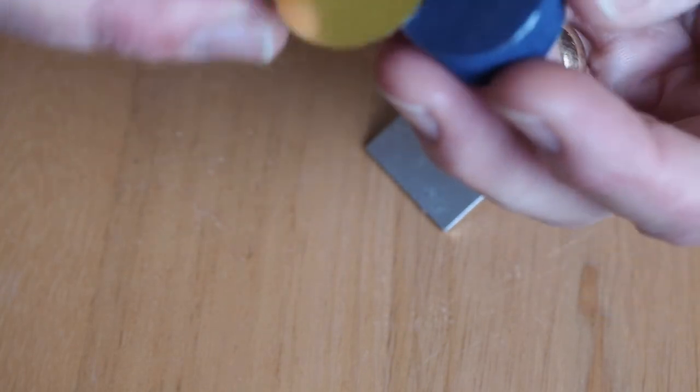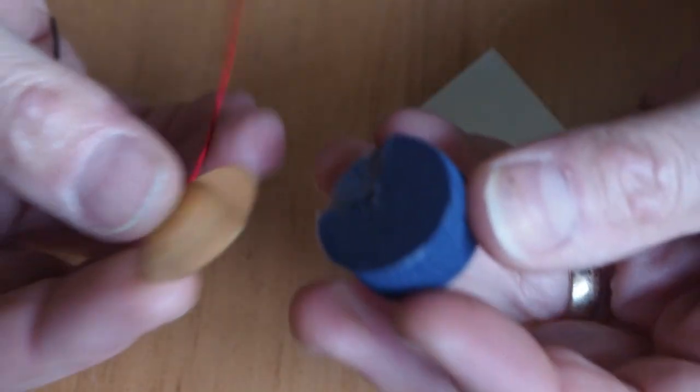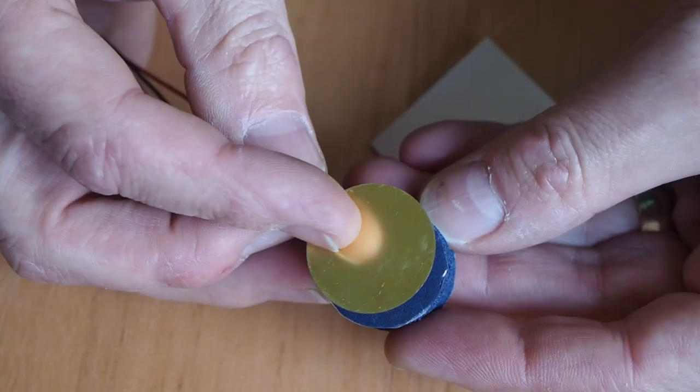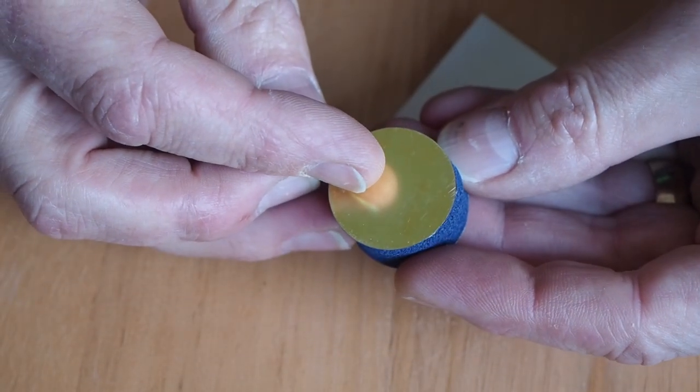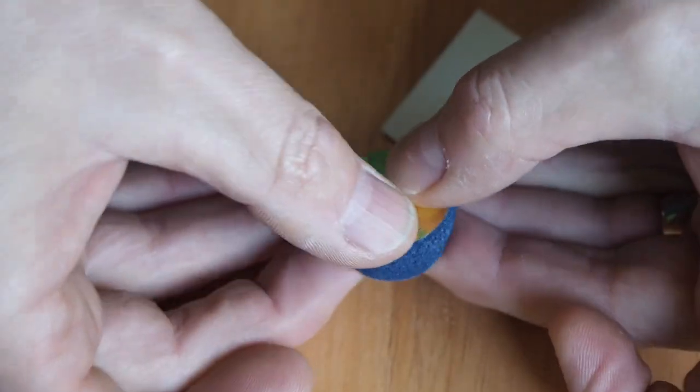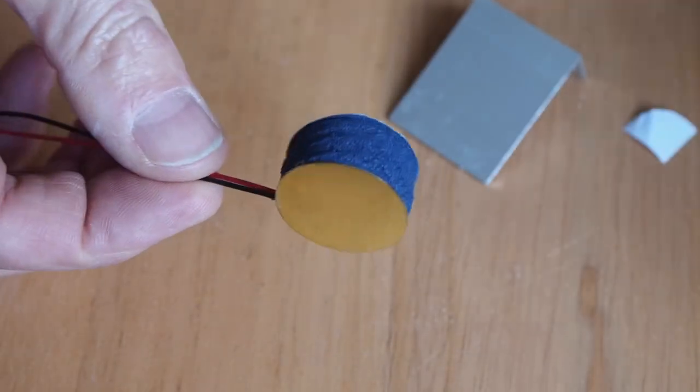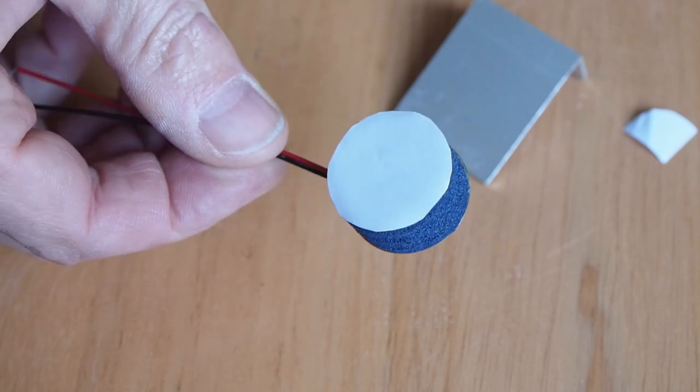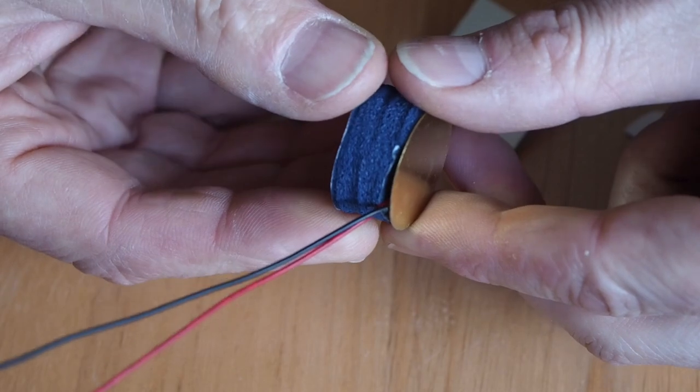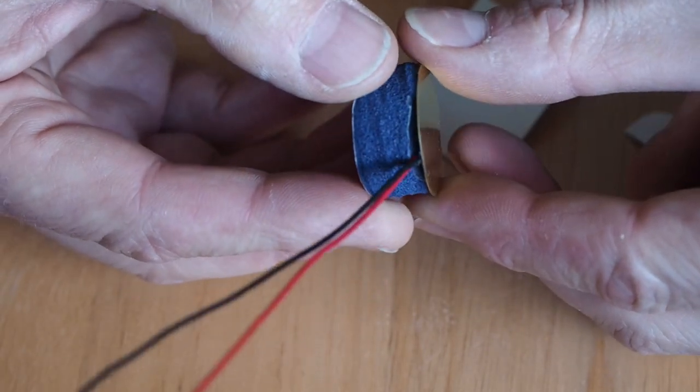Remove the backing paper and then, taking care to line up the cutout with the wires on the piezo, just simply stick the piece of foam directly onto the face of the piezo sensor and gently push it down. Okay, so that's the first part.